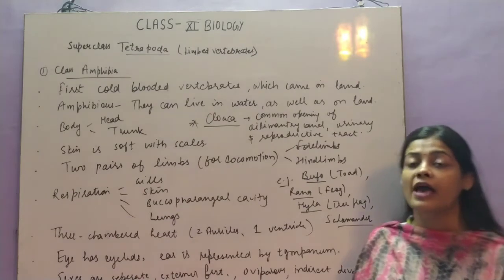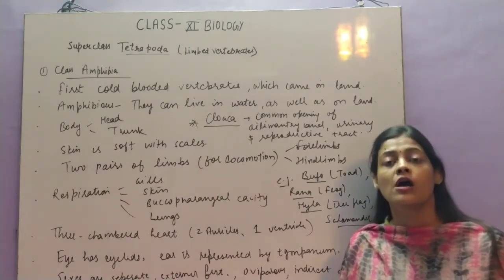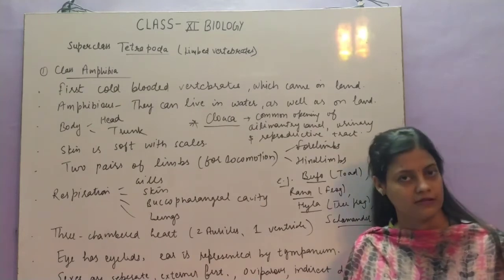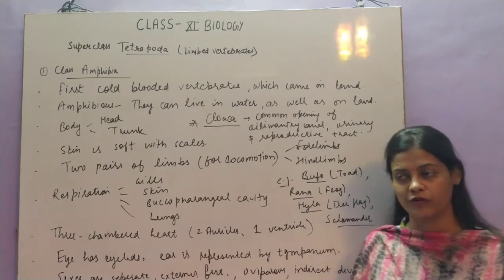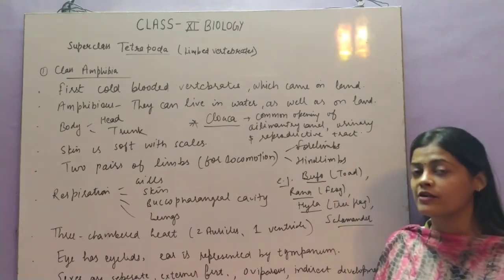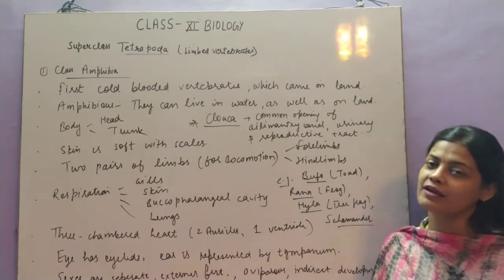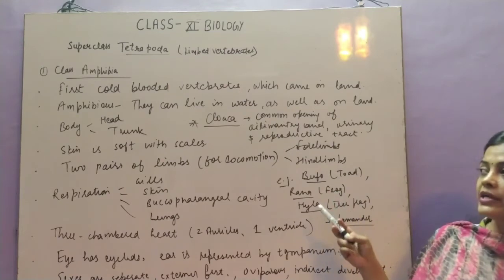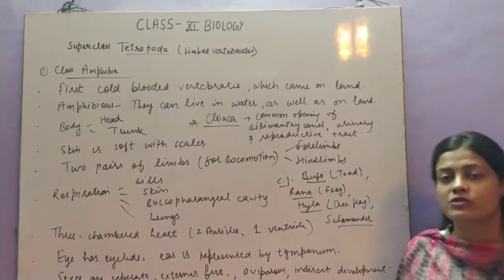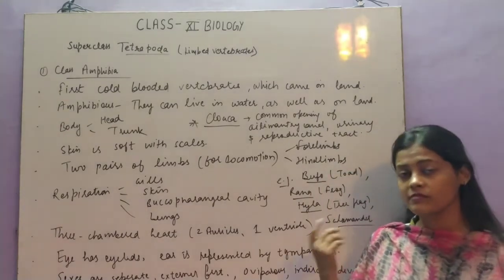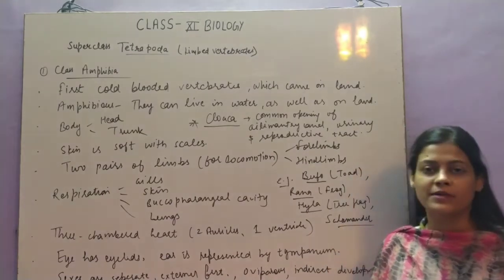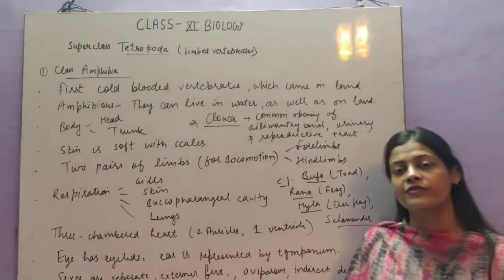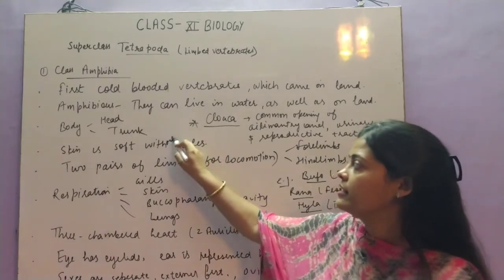They are amphibious in nature — the word amphibian is specifically used for those which can live in water as well as on land. Like bryophytes in the plant kingdom are called amphibians of the plant kingdom because they need both water and land to complete their life cycle. The body is divided into head and trunk — in a frog there is no neck, and very few examples like salamander have a tail.